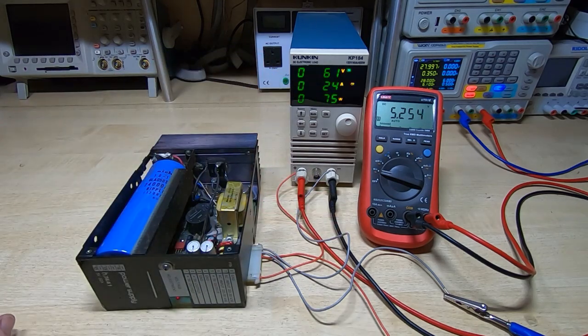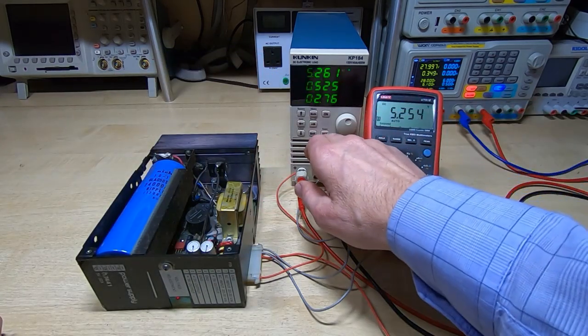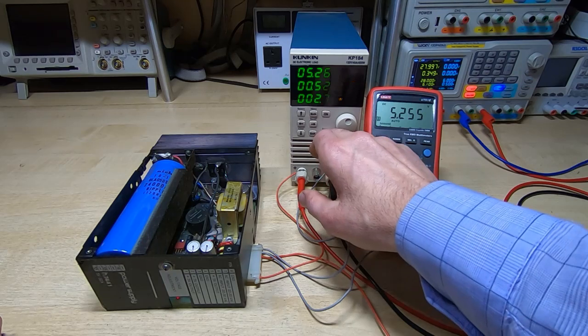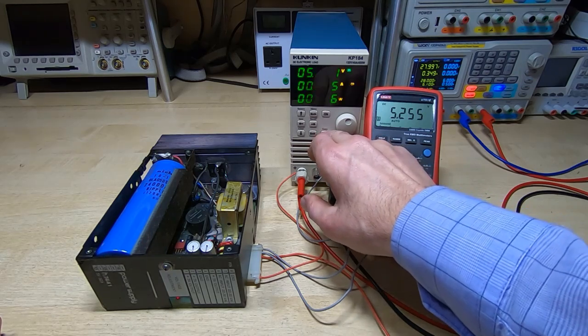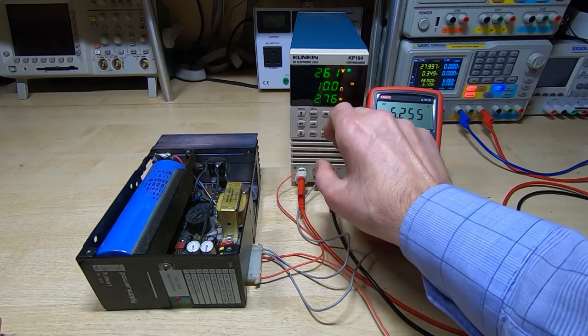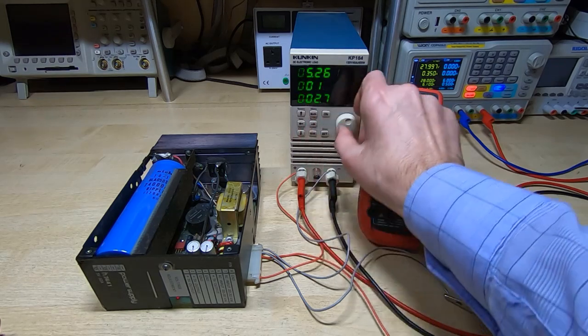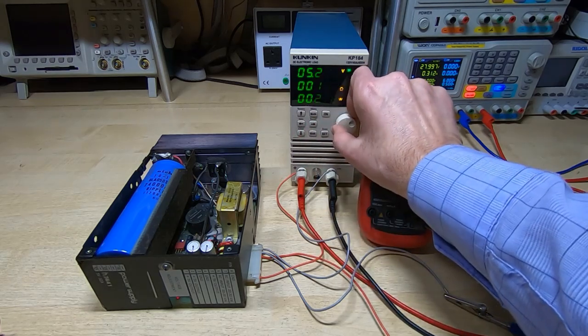Now I'll increase the load on the supply. We're drawing just around half an amp at the moment. It would normally supply much more than that, so I'll adjust the setpoints for the electronic load. I'm going to set it to 5 ohms.